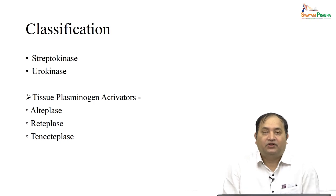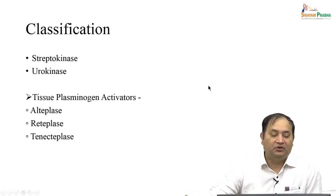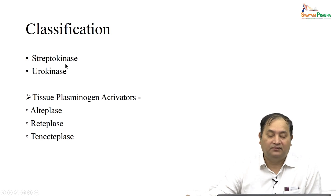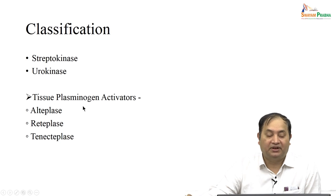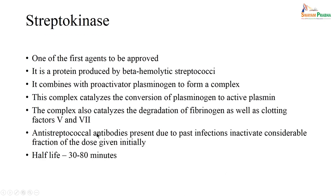You can classify thrombolytics as older agents — streptokinase and urokinase — and newer agents like tissue plasminogen activators: alteplase, reteplase, and tenecteplase. These are the newer drugs which are in current clinical practice.